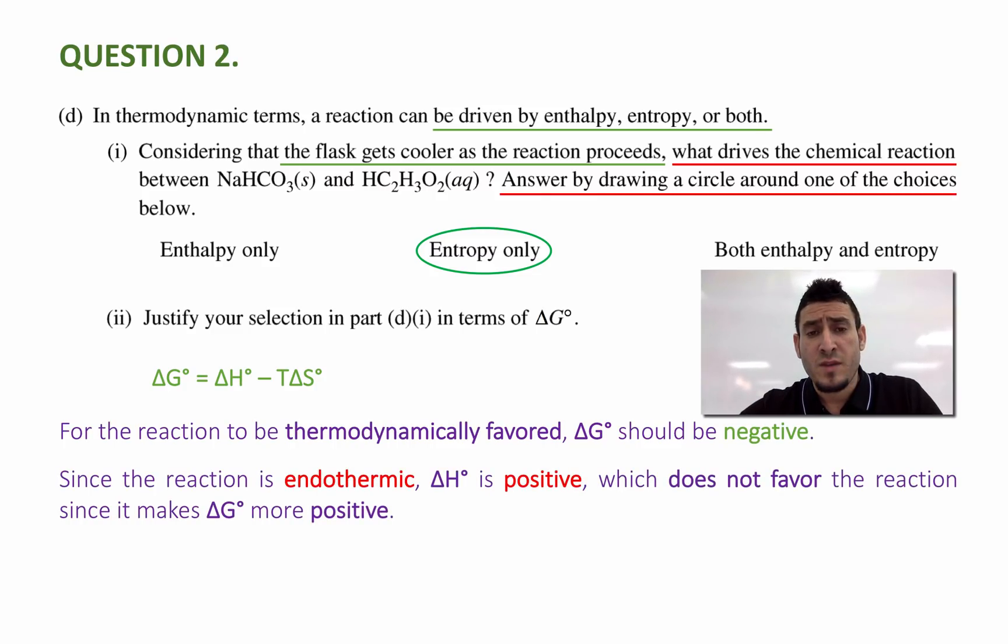Now for the reaction to be thermodynamically favored, delta G zero should be negative. Now since the reaction in question is endothermic, since he says the flask gets cooler as the reaction proceeds, so this reaction is endothermic, and delta H zero is positive, which does not favor the reaction because it makes the delta G zero more positive.